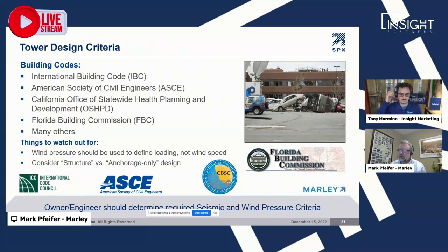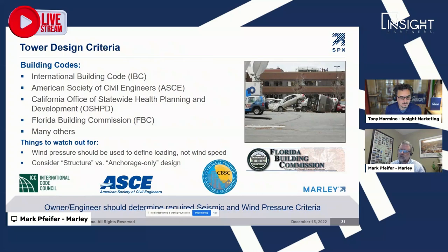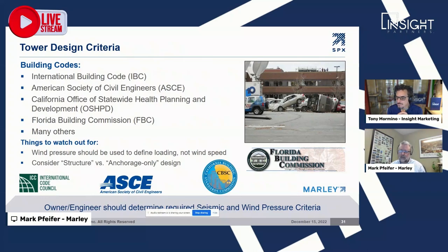There are other building codes and design criteria to include: IBC is common. OSHPD applies to California healthcare requirements. Florida building code does come up for those designing in the Florida region — they have high wind requirements. We ask that design engineers determine the wind pressure for manufacturers to meet. Sometimes we get vague wind speed requirements that aren't definitive, which means manufacturers have to make their own assumptions and results may vary. If you provide a specific wind pressure, we can clearly state which model meets your requirement.